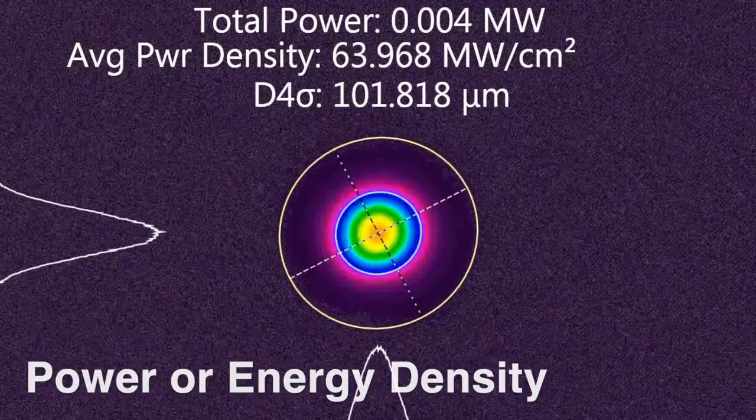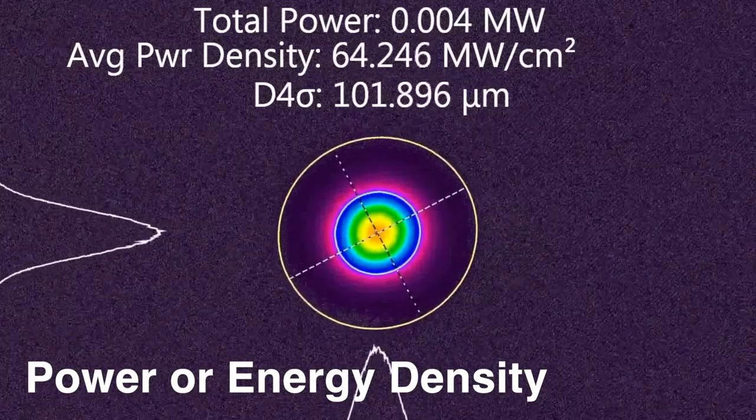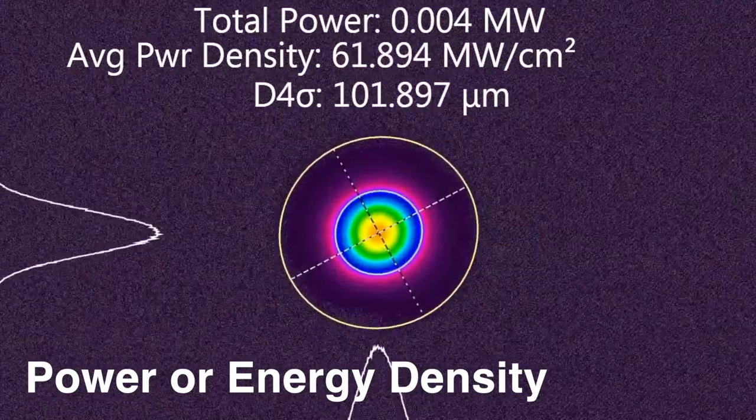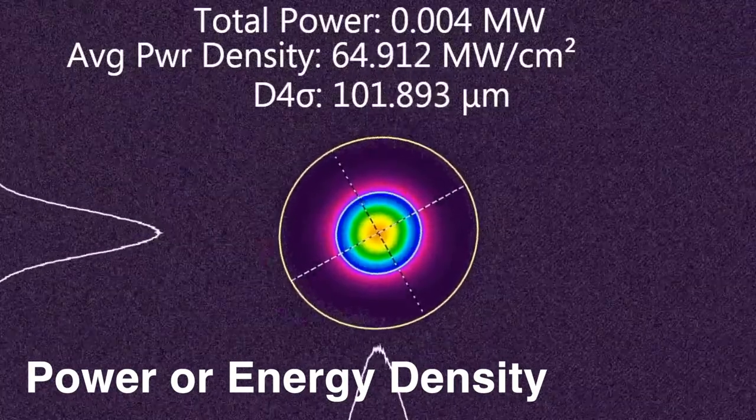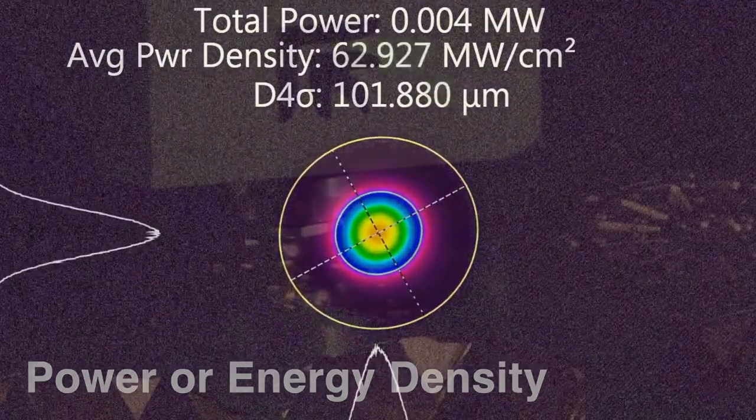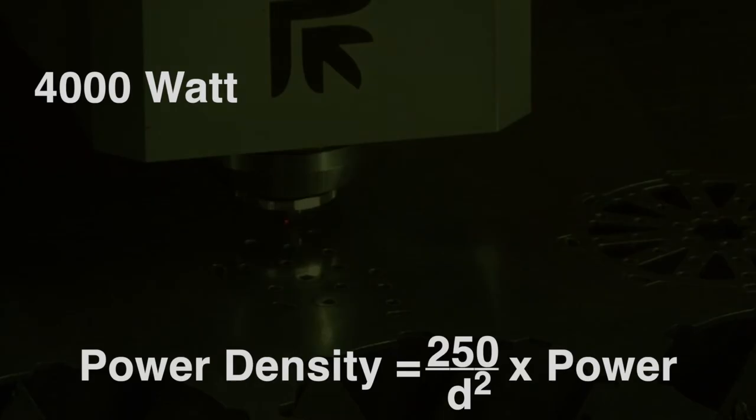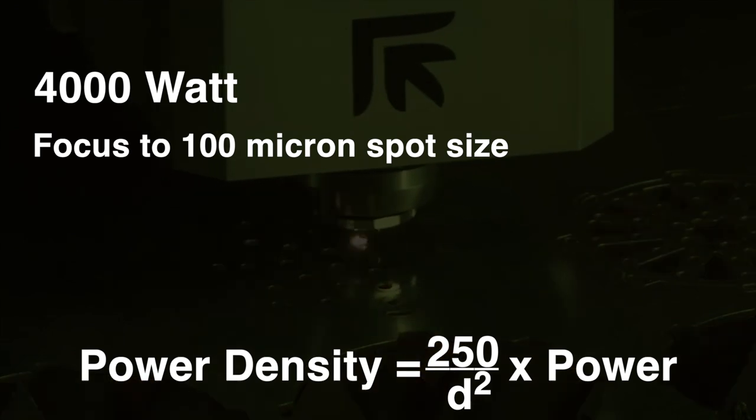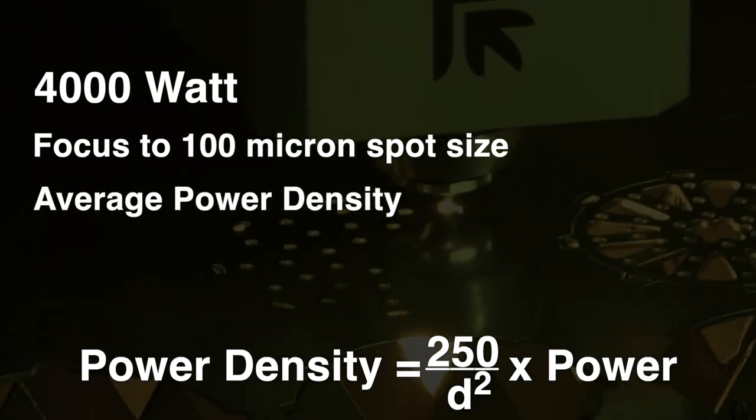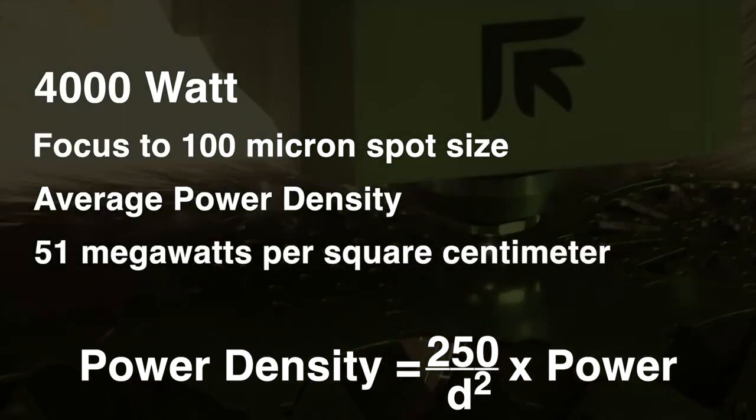The concept of power or energy density describes the intensity from continuous wave or average power lasers or from pulsed lasers and how it is concentrated into a certain amount of space. For example, a 4,000-watt laser focused to a 100-micron diameter spot size will yield an average power density of approximately 51 megawatts per square centimeter.